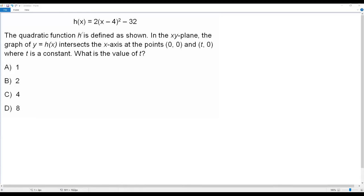So we have the two x-intercepts of this quadratic function h(x). They are (0, 0) and (t, 0).